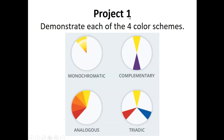That brings us to our project. Today you're going to demonstrate each of the four color schemes by creating a quadratic artwork. In your first quadrant, you'll have a monochromatic color scheme; second quadrant, complementary; third, analogous; and fourth, triadic. Thinking in math terms: quadrant one is complementary, quadrant two is monochromatic, quadrant three is analogous, and quadrant four is triadic — always trying to integrate a little bit of math!